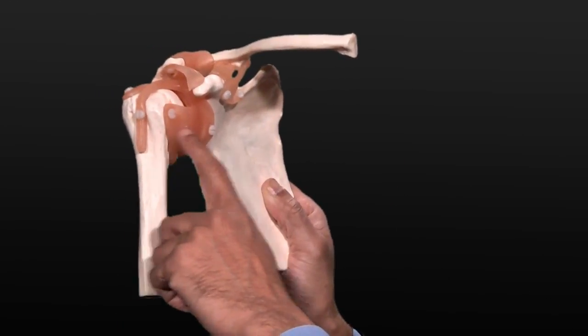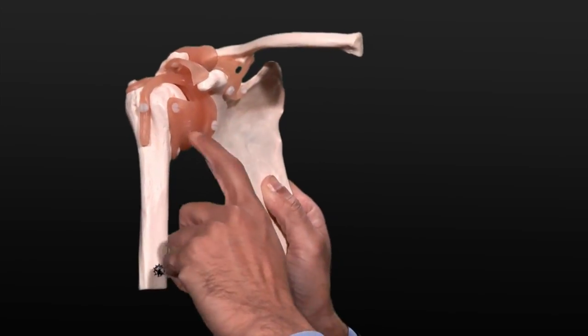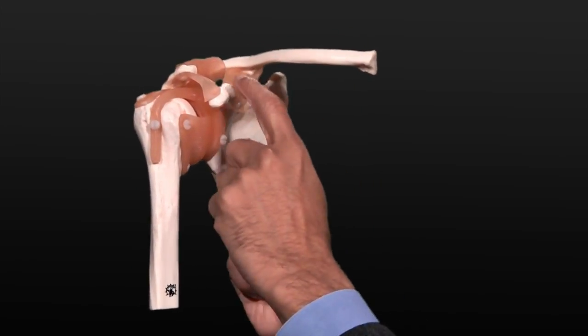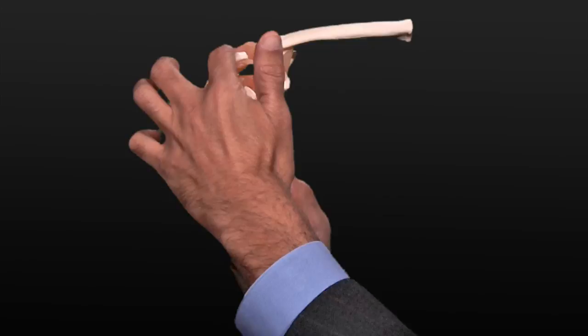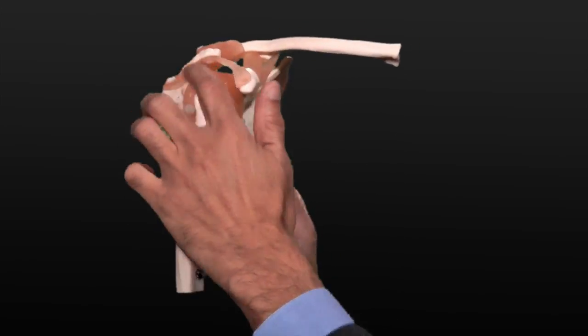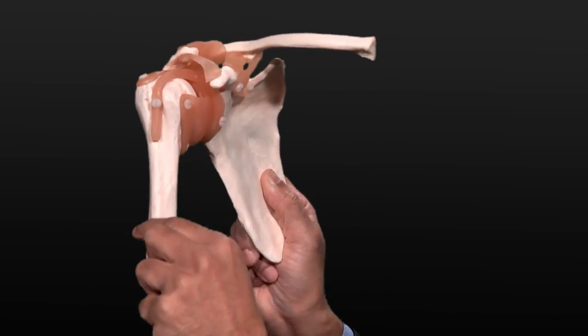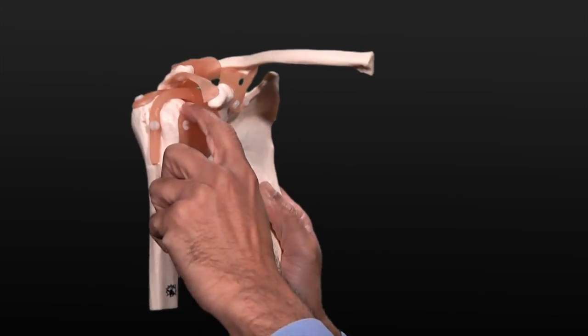So we have the shoulder joint here, the shoulder blade, the clavicle, the acromion bone which is part of the shoulder blade, and then the shaft of the arm bone, the humerus, and the ball joint.